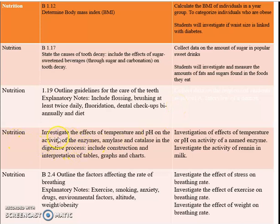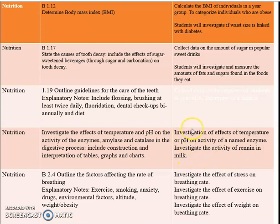Nutrition continues with investigating the effect of temperature and pH on the activity of enzymes — amylase and catalase — in the digestive process, including construction and interpretation of tables, graphs, and charts. The activity involves investigation of the effects of temperature or pH on the activity of a named enzyme, such as investigating the activity of rennin in milk. Students choose an enzyme and investigate the effect of temperature or pH on it.